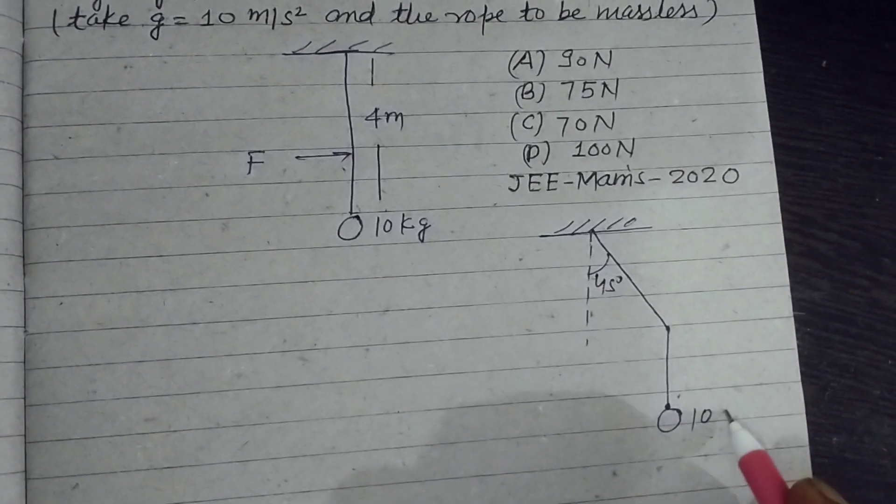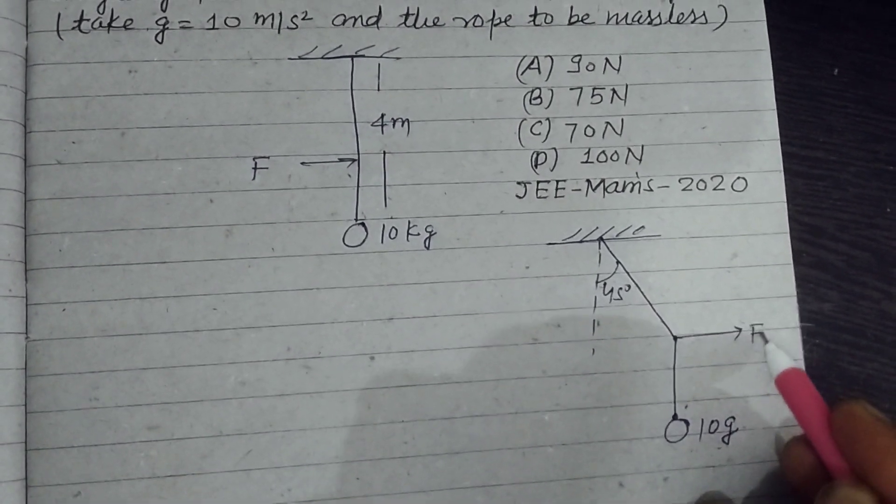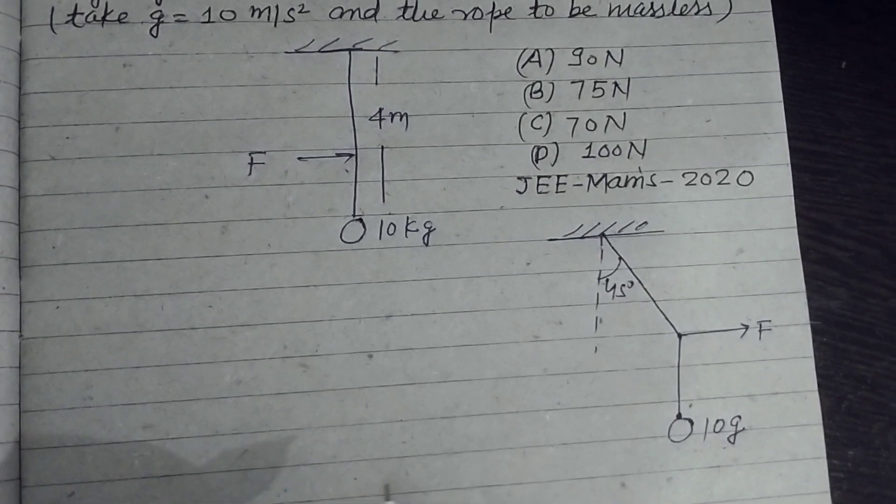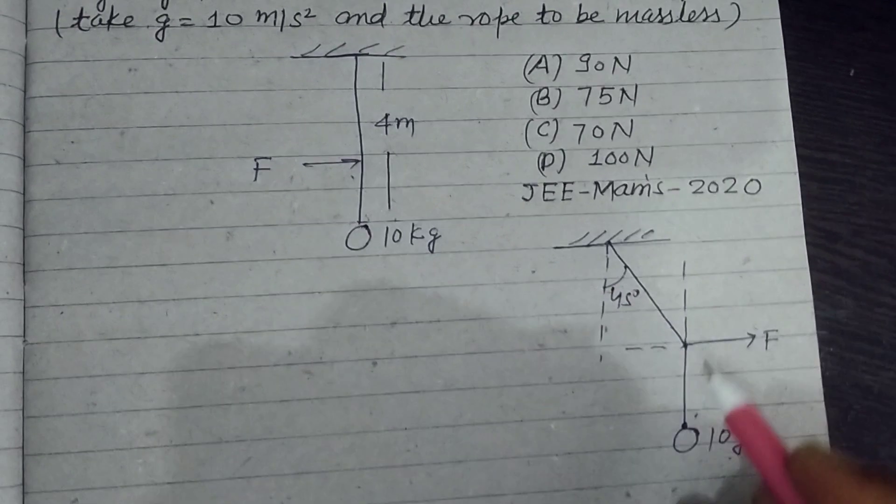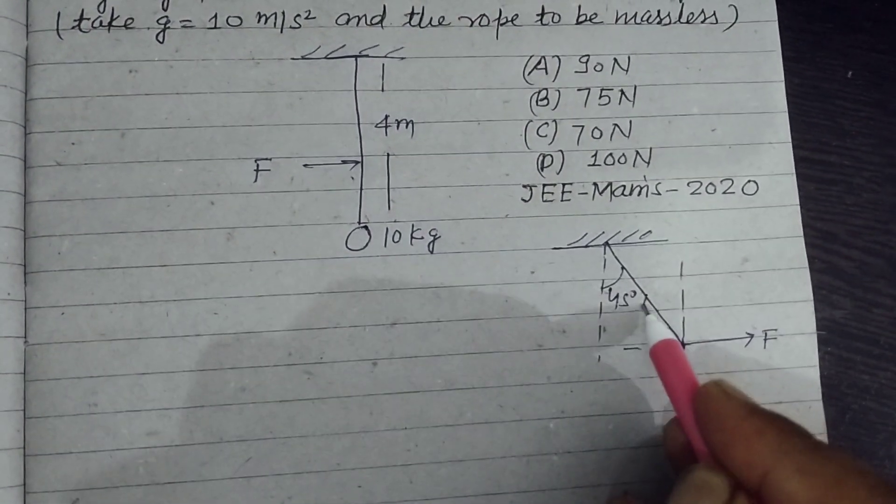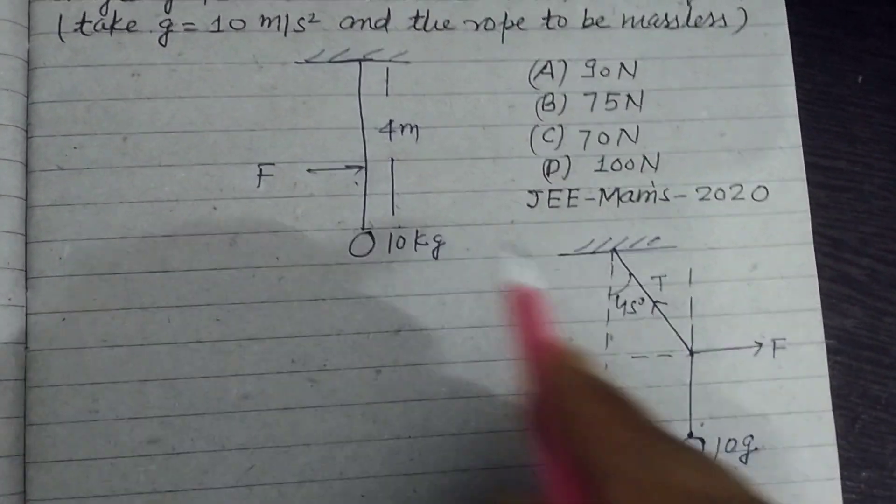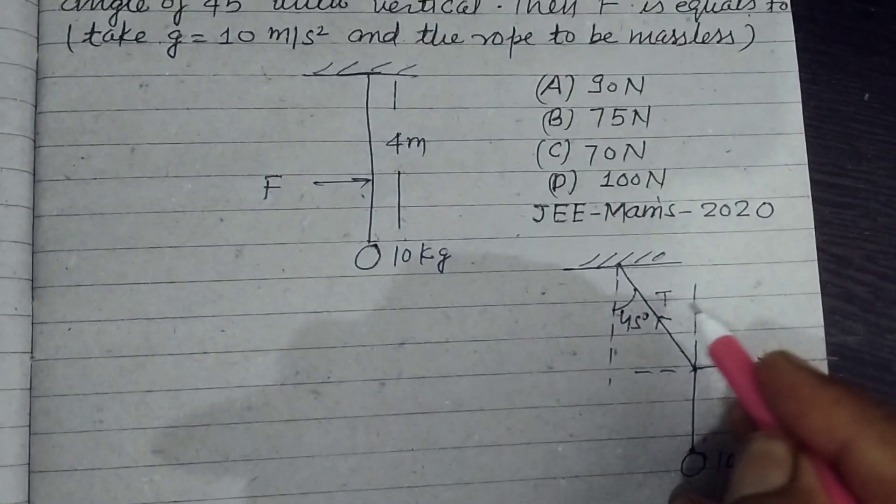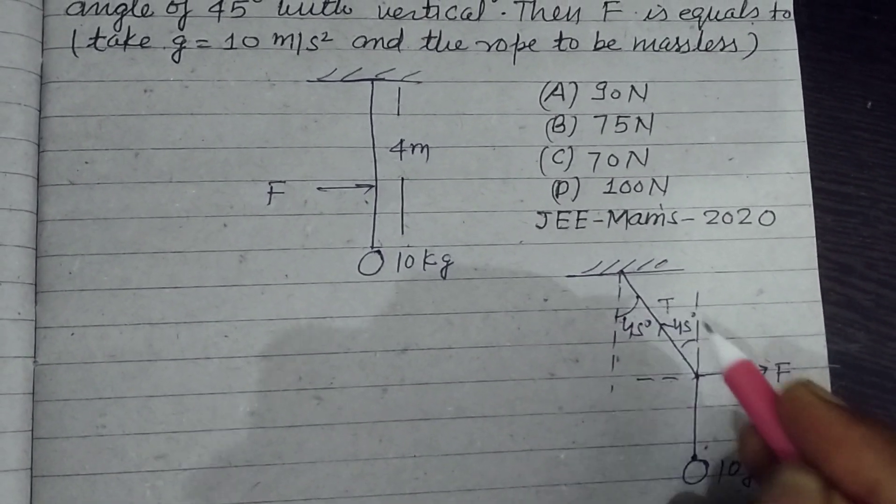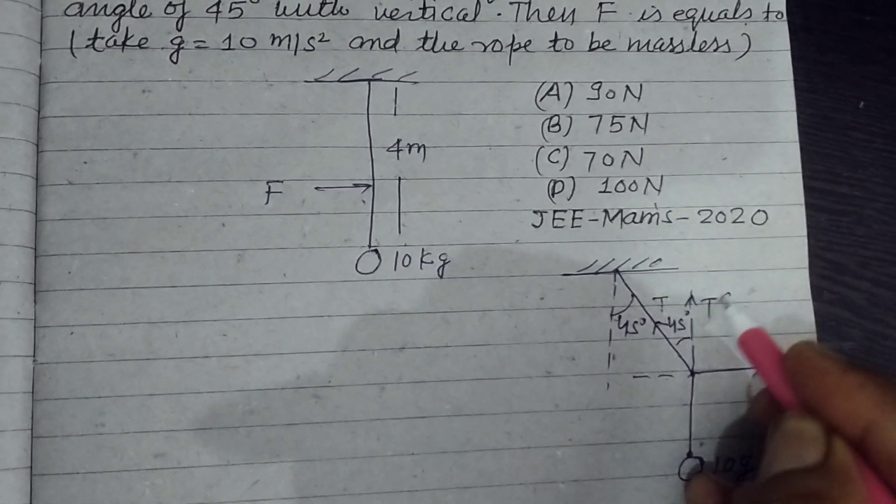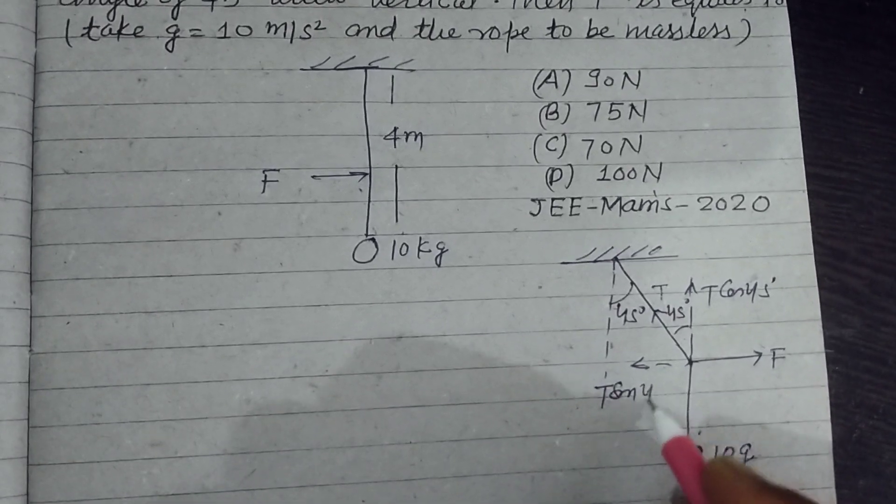And this force is acting in the horizontal direction F. So let's first break this tension of the rope T in two directions. If this is 45°, this is also 45° because these are parallel lines. So T cos 45° and this is T sin 45°.